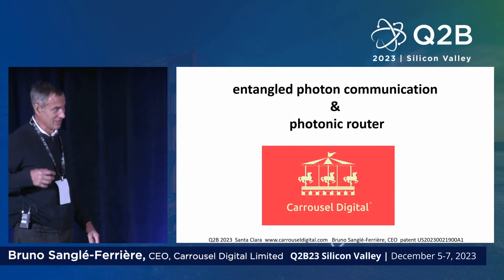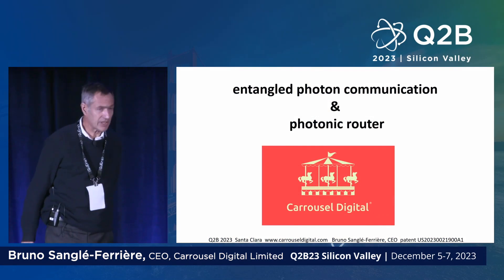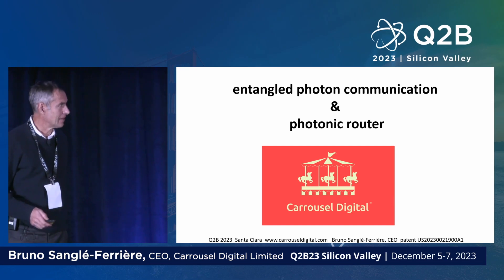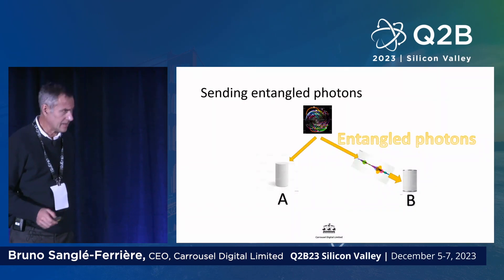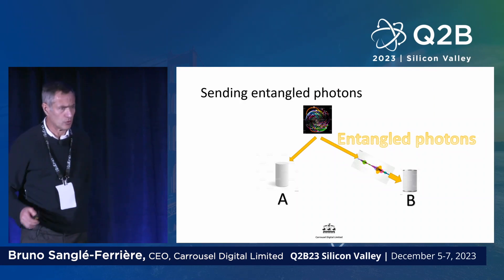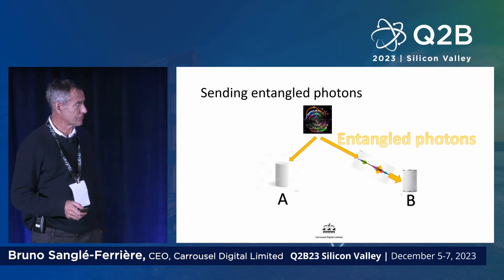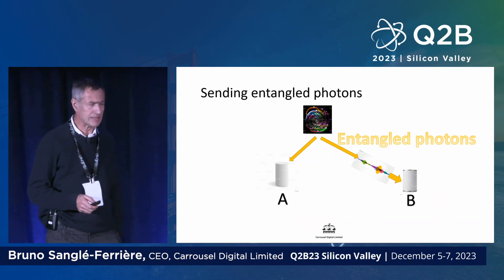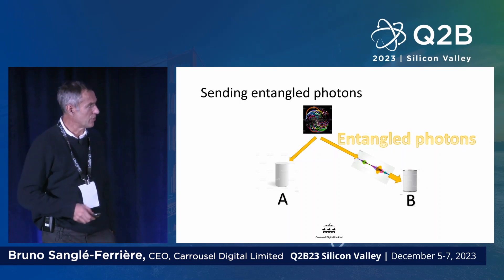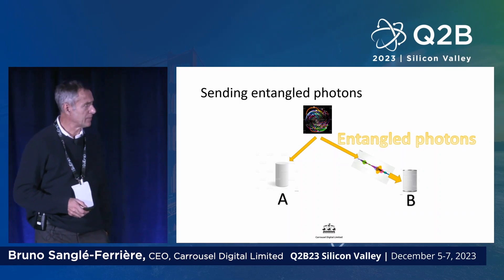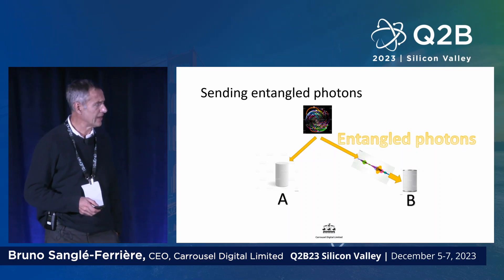Thank you very much for attending this presentation on entangled photon communication and photonic router. It is a process to communicate regular bits using entangled photons. Here we have on the top an entangled photon emitter which is sending pairs of entangled photons to A and B.